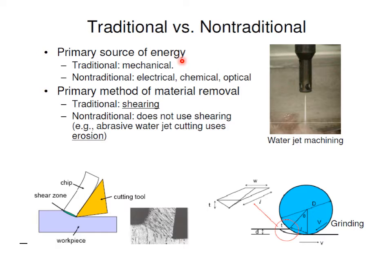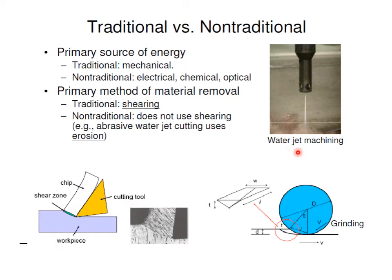The primary source of energy in traditional machining is mechanical — you use a cutting tool, it comes into contact with the workpiece, and there is a certain relative motion. In non-traditional, different sources of energy can be used. You can see conventional machining techniques such as turning on a lathe using a single point cutting tool with mechanical force, and grinding using multi-point cutting tools in the form of abrasive wheels with mechanical force acting to remove material.